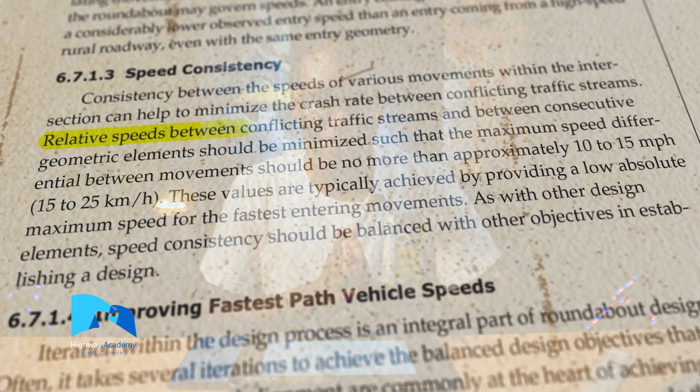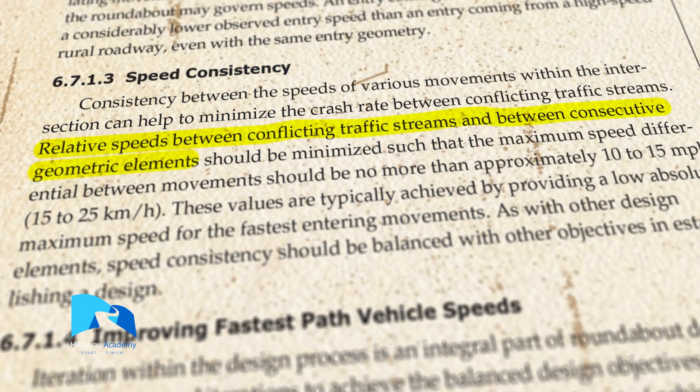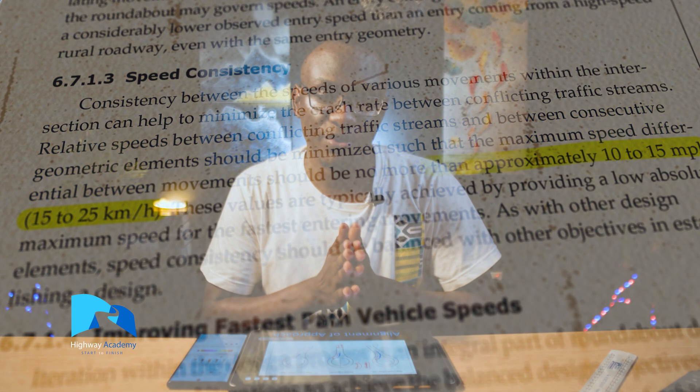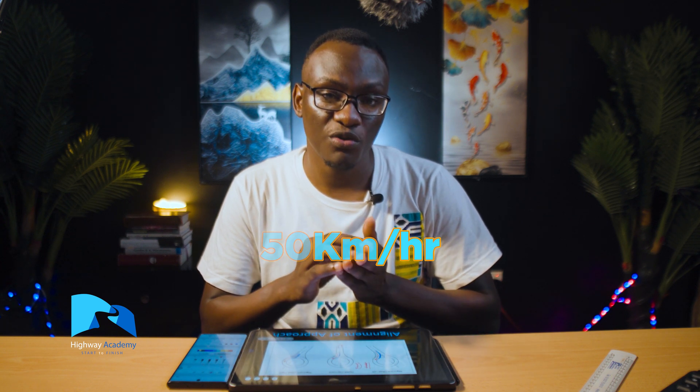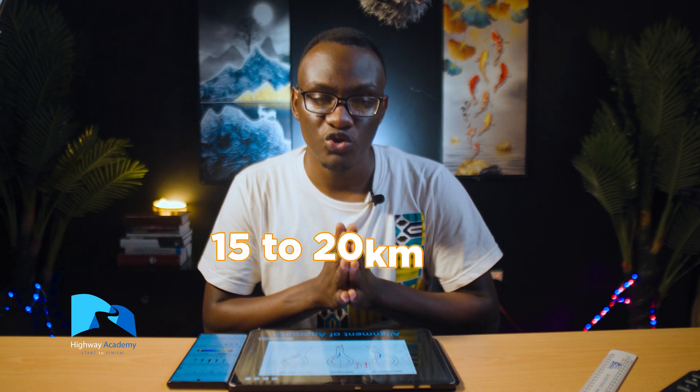To ensure speed consistency on a roundabout, it is always recommended to have a small difference between the speed at which cars are entering, circulating, and exiting the roundabout. According to the roundabout informal guide, the recommendation is a difference of 10 to 15 miles per hour, which equates roughly to 20 to 25 kilometers per hour. For example, if you are entering at 50 kilometers per hour, it is recommended to have a difference of at least 15 to 20 kilometers per hour.